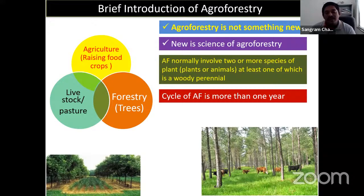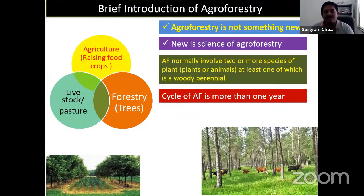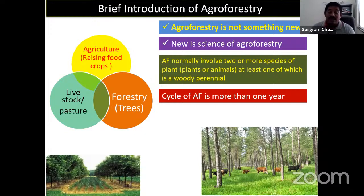No farmer is ready to grow trees alone because he wants to fulfill his demand for food and also generate some income. As we know, planting trees is not a one-year or two-year affair — it takes a minimum of five to fifty years. So raising crops alongside is one of the important things.